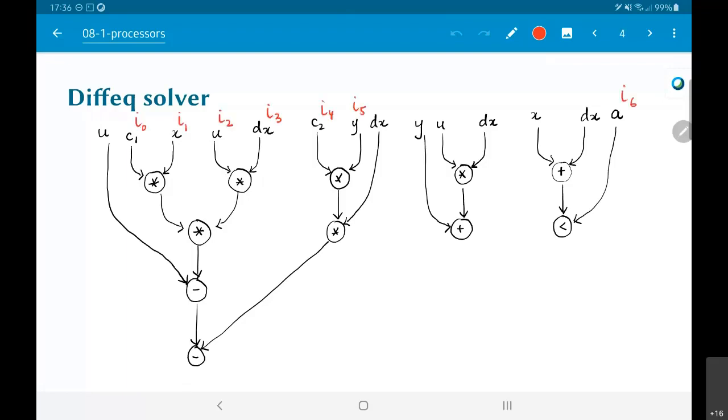I am now marking the inputs to the system and giving them some new names. So I'm basically calling C1 as I0, X as I1, U as I2 and so on. And effectively what I can see in this way is that I have six inputs, sorry, seven inputs to the system. C1, X, U, DX, C2, Y and A.